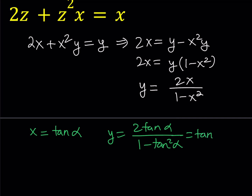How do you know that x is equal to tangent α? Since x can range anywhere between negative infinity and infinity — except for the two values plus or minus 1 — and tangent can be pretty much anything, we can safely let x equal tangent α. We're just supposing that x equals tangent α, and from here we get a really nice result.